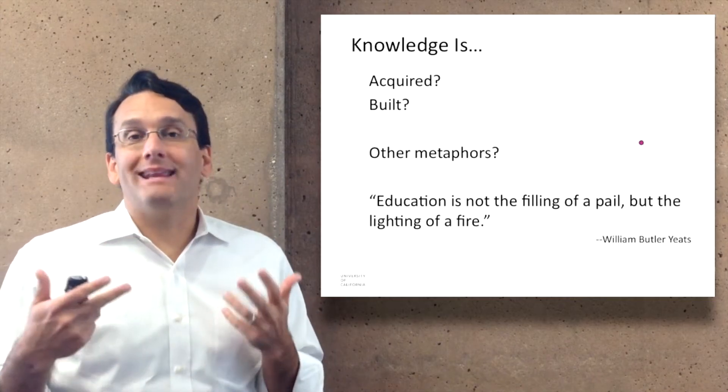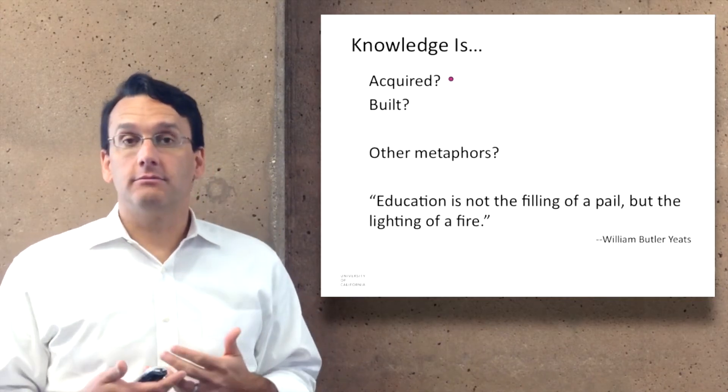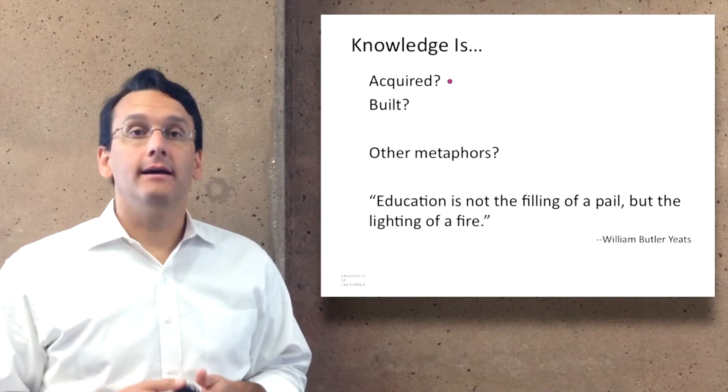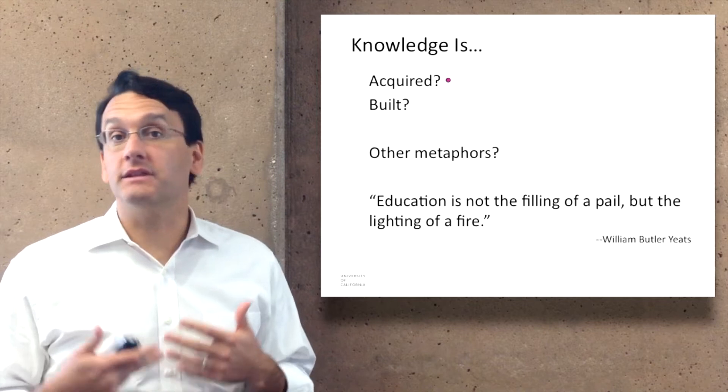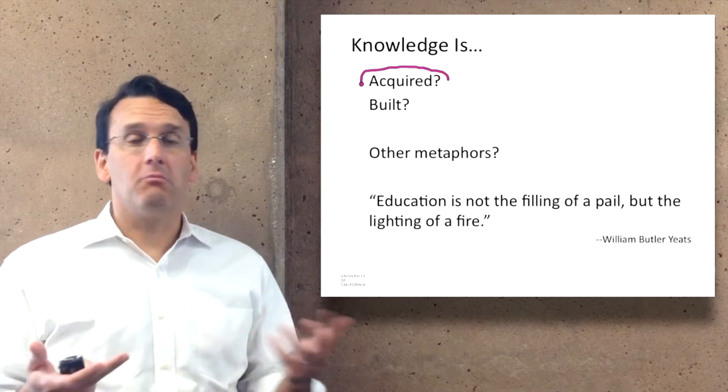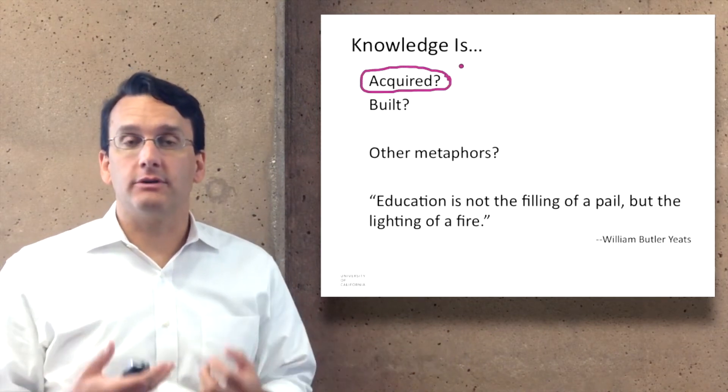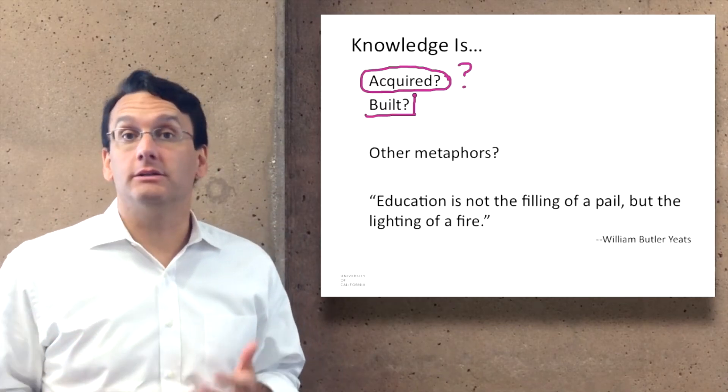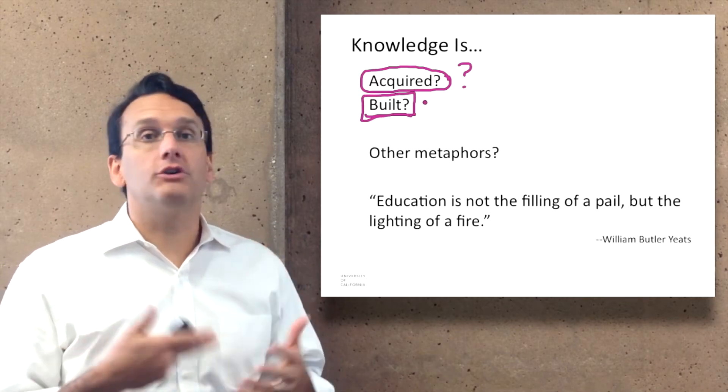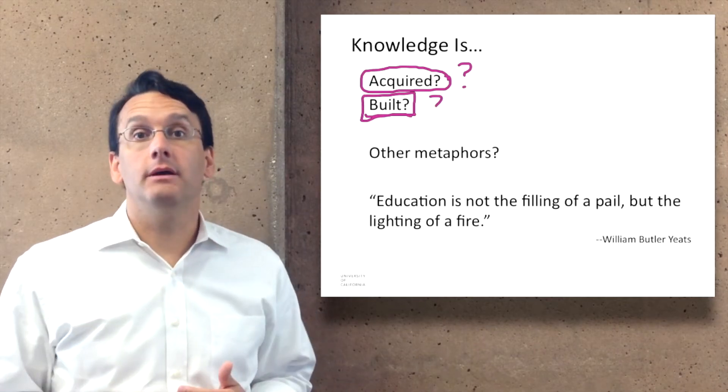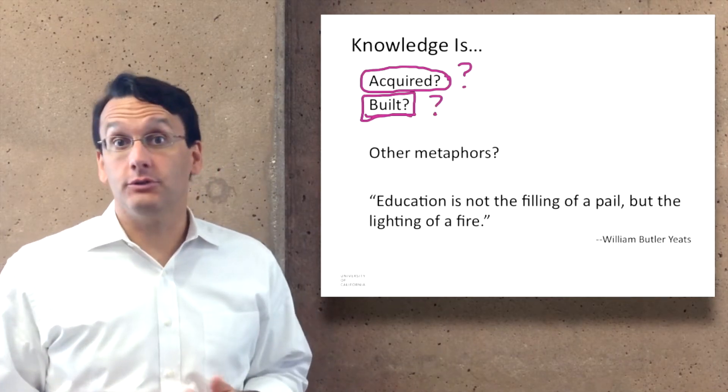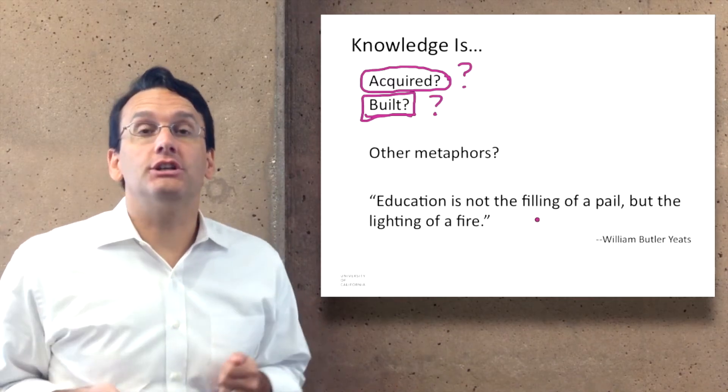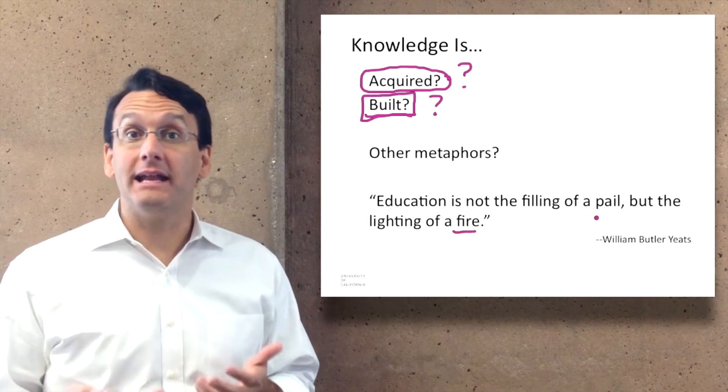There are a variety of ways that you might think about knowledge, what science is meant to accumulate. You can think about it as being something that's acquired, where it's like money and you can gather it together and store it up. You can also think about it as something that's built so that your understanding is assembled over time. William Butler Yeats talked about education is not the filling of a pail but the lighting of a fire.